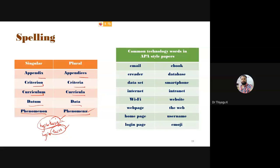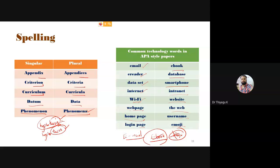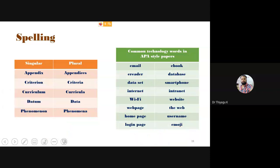While using APA style, particularly for computer technology terms, people normally write 'email' differently — but APA specifies: e-mail, e-reader, data set, internet, Wi-Fi (W and F capital), web page (no caps needed), home page, login page, e-book, database, smartphone, intranet, website, the web, username, emoji. Some people write emoji with a capital first letter — don't use this in dissertations. These are the standard APA spellings for technical terms.